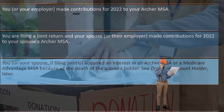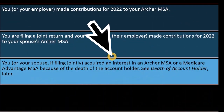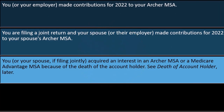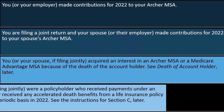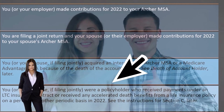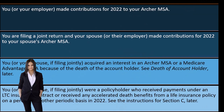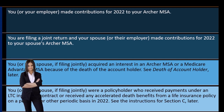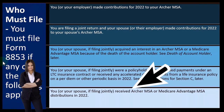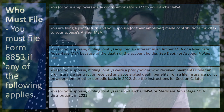You or your spouse, if filing jointly, acquired an interest in an Archer MSA or a Medicare Advantage MSA because of the death of the account holder. You or your spouse, if filing jointly, were a policyholder who received payments under an LTC insurance contract or received any accelerated death benefits from a life insurance policy on a per diem or other periodic basis in 2022 — see instructions for Section C. You or your spouse, if filing jointly, received Archer MSA or Medicare Advantage MSA distributions in 2022.